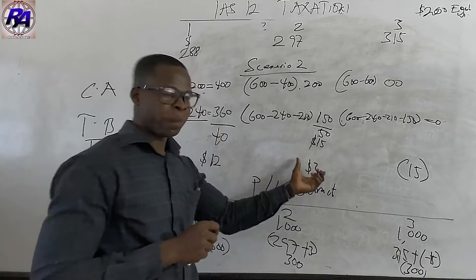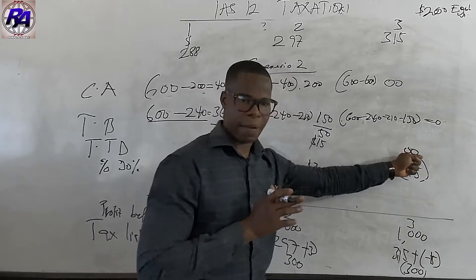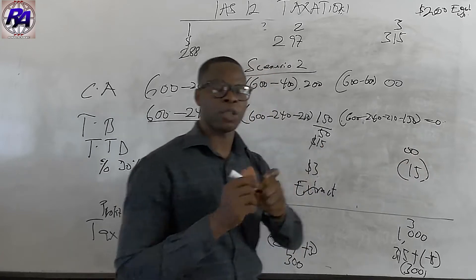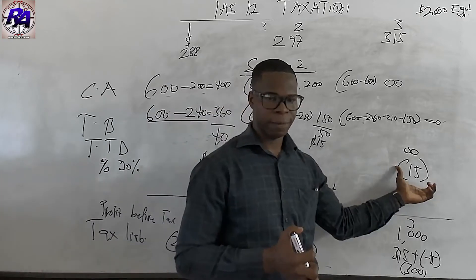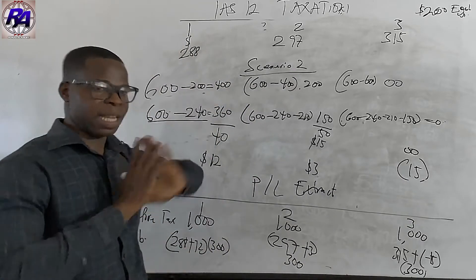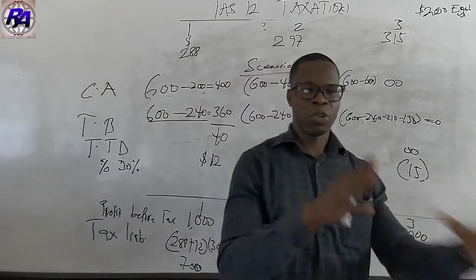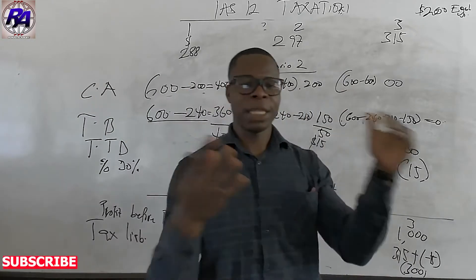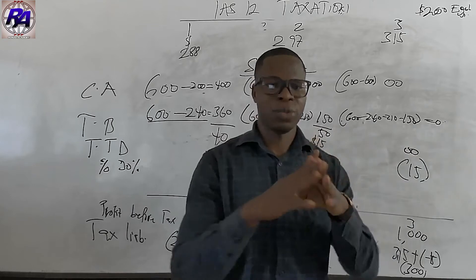So at the end of both scenarios: dealing with only current tax gave us values of $288, $297, and $315. But adding deferred tax gives us $300 in each year consistently. This demonstrates the computation of deferred tax — how to find deferred tax assets and deferred tax liabilities and add them to current tax to get the total tax charge for the period. Thank you.